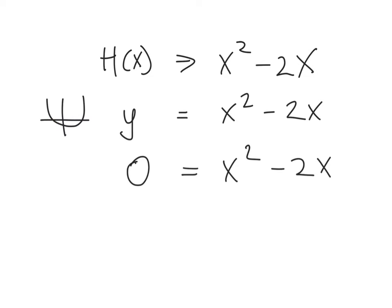Now, the first thing I always do when I get a function question like this, I change the h(x) or the f(x) or whatever it may be to a y and change the arrow to an equal sign. So you're left with an equation, y equals x squared minus 2x.